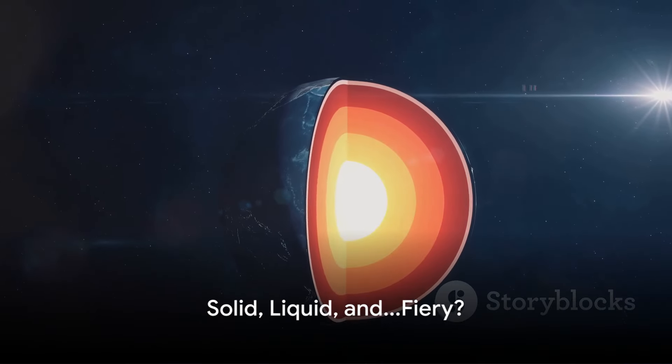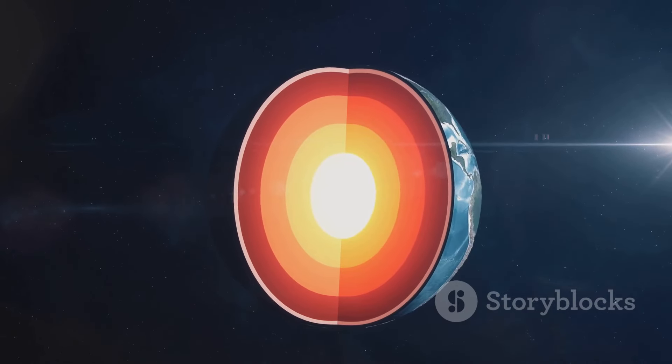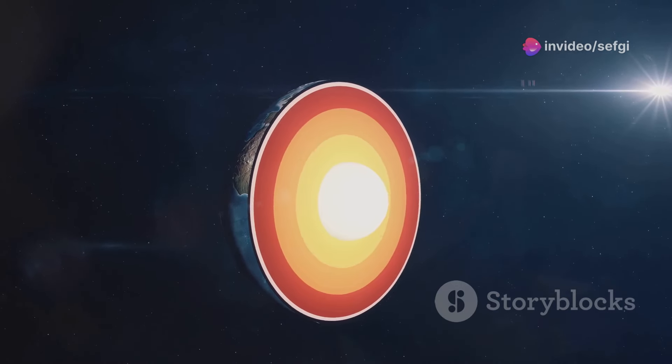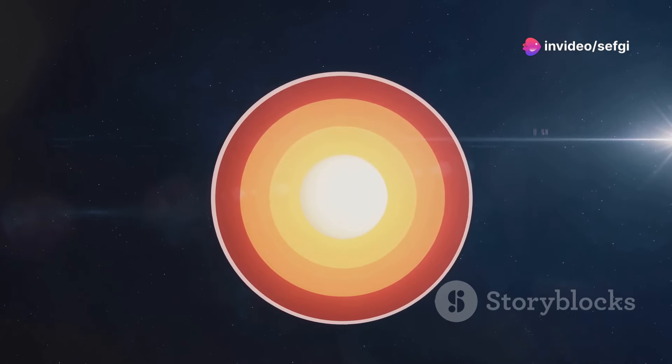We all learned about Earth's layers in school, but did you know our planet's core is a boiling liquid metal? Now let's break this down. The Earth's core, the deepest part of our planet, is composed mostly of iron and nickel.